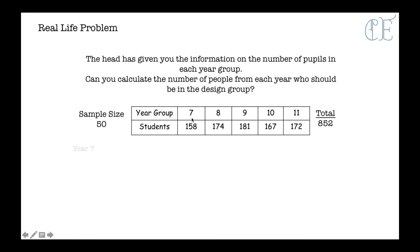So first of all, year 7. Year 7 has 158 students out of 852 in total. We times that by 50. So if you're struggling with how to do this on your calculator, do 158 divided by 852, press equals and then press times by 50, and it will give you the answer. So 9.27, so we would say 9 in year 7.